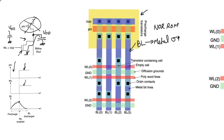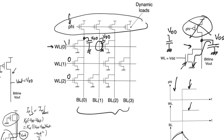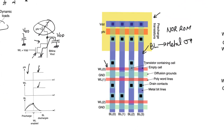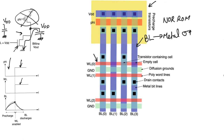Using metal for bit lines provides high conductivity, allowing us to treat them as lumped capacitors and ignore their resistance when estimating delay. Word lines, on the other hand, are implemented in the polysilicon layer because word lines must contact the gates of NMOS transistors, which are themselves made of polysilicon.